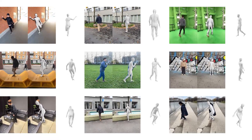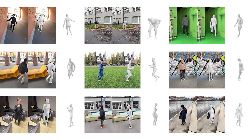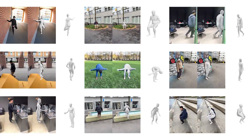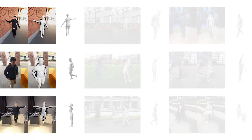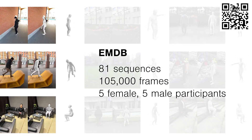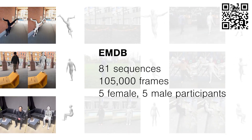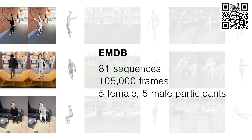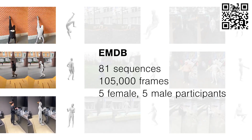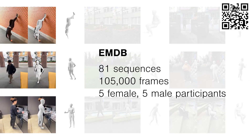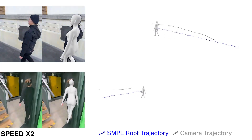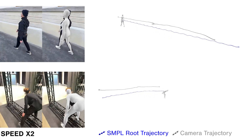We use EMP to produce EMDB, a novel dataset of 3D human pose and shape recorded in the wild. EMDB contains a total of 81 sequences and 105,000 frames, distributed over 5 female and 5 male participants. It contains several sequences with challenging poses and occlusions. EMDB also provides global trajectories, which allows researchers to study the emerging task of global human and camera pose prediction.